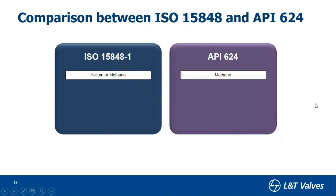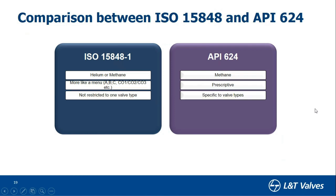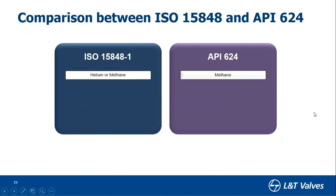Now let's compare the two widely specified standards: ISO 15848 Part 1 (qualification standard) and API 624. The test media for ISO is helium or methane, whereas for API it is only methane. API has fixed, prescriptive standard values — for example, you must do a specified number of cycles and the leakage level is 500 ppm. ISO, on the other hand, has different categories of leakage — Class A, Class B, Class C — and cycle categories CO1 (1000 cycles), CO2 (higher cycles), making it more menu-driven.